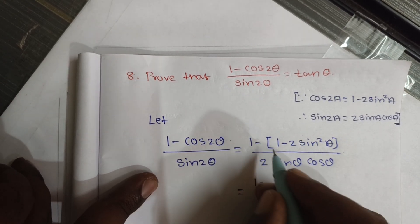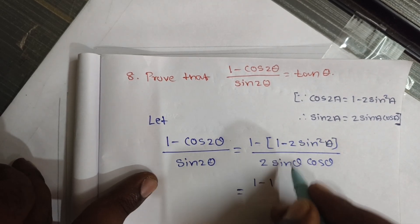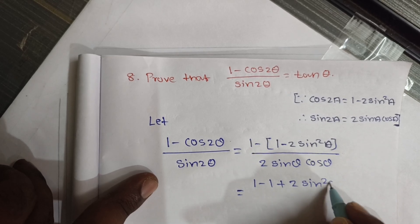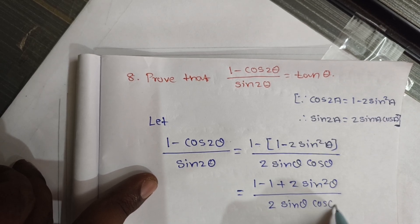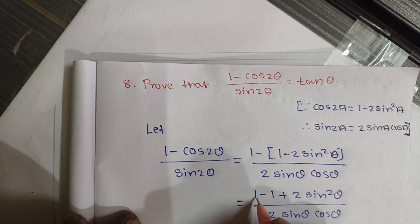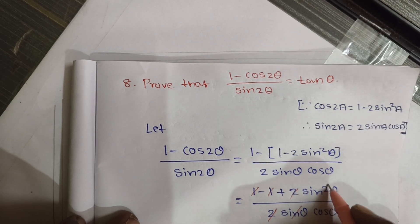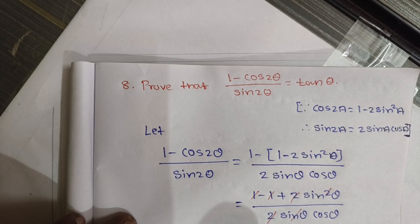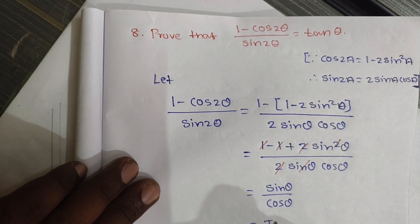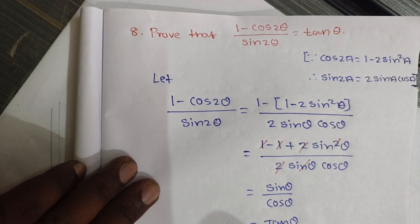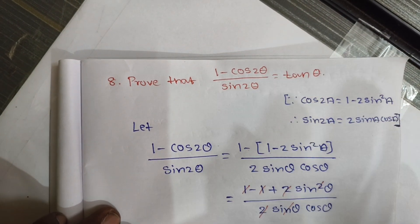Now, we apply: 1 minus (1 minus 2 sin squared theta), which gives minus into minus plus, so we get 2 sin squared theta divided by 2 sin theta cos theta. The 1 and 1 cancel, 2 cancels, and sin theta cancels, leaving sin theta divided by cos theta, which equals tan theta. This is a 3 marks result.